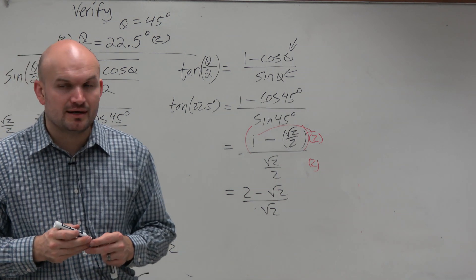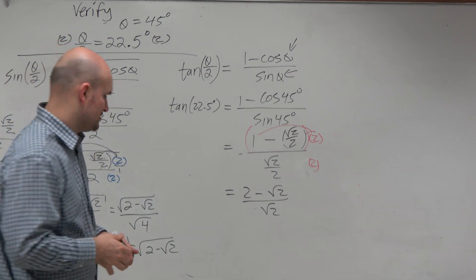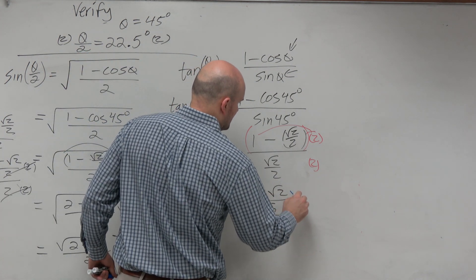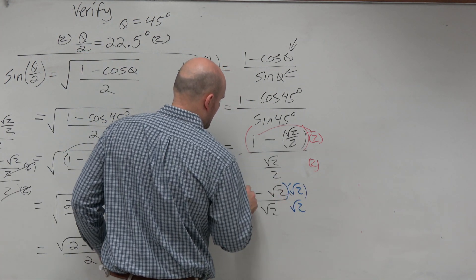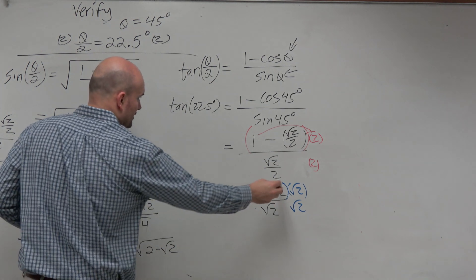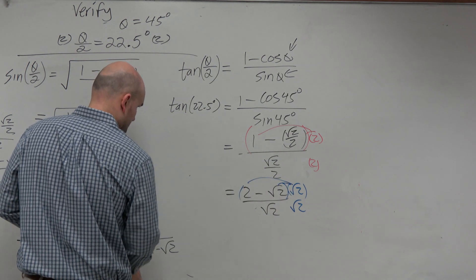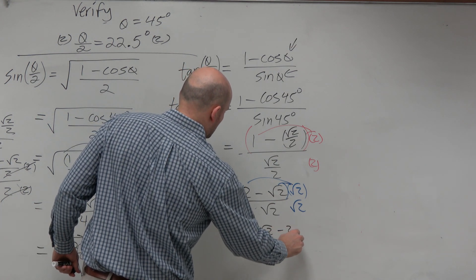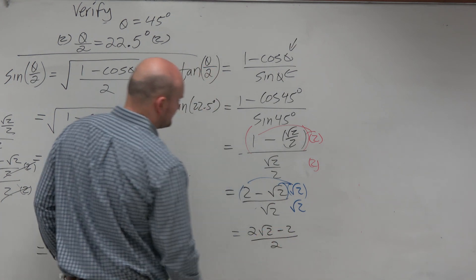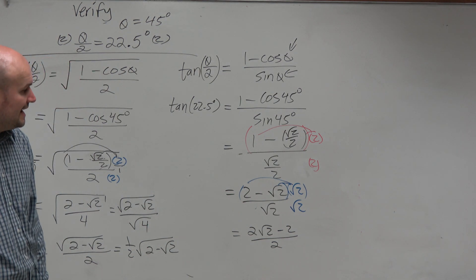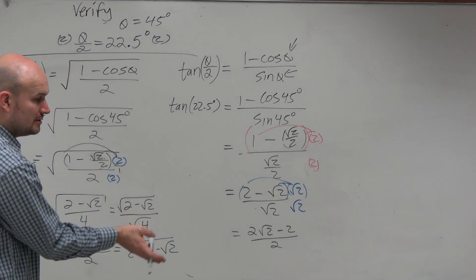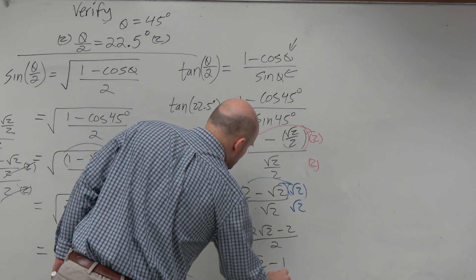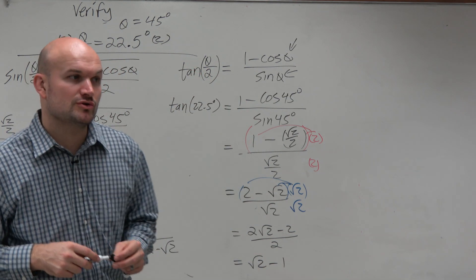If I need to get rid of the radical, I can just rationalize the denominator. Please make sure you're distributing. We can distribute that 2 into both of these terms to give me a final answer of square root of 2 minus 1. That is what your multiple choice question would look like.